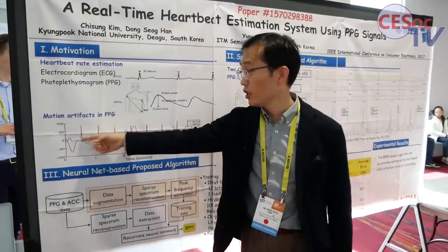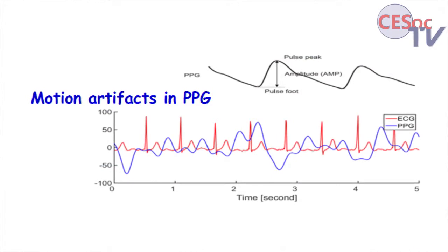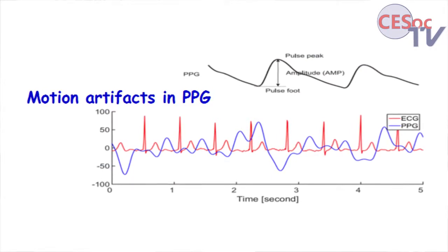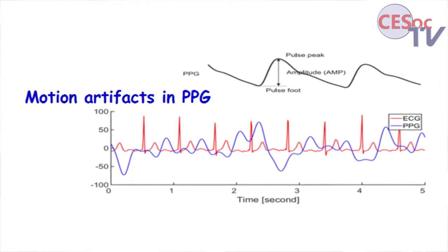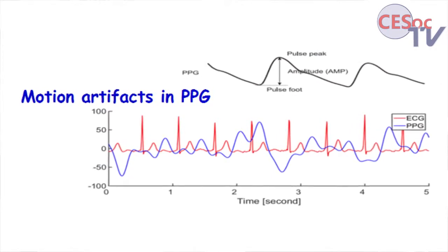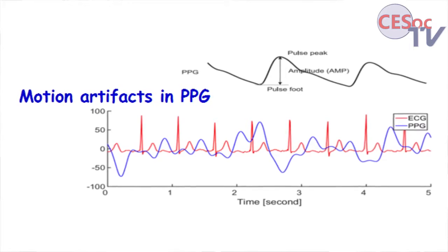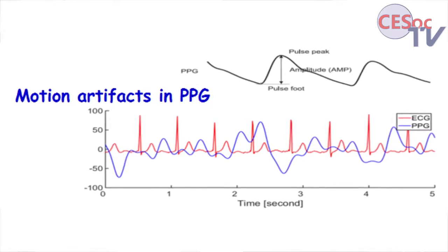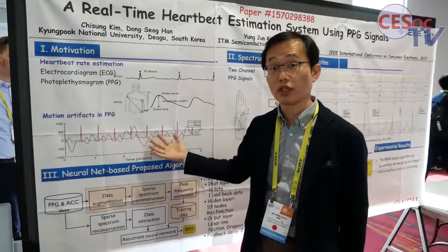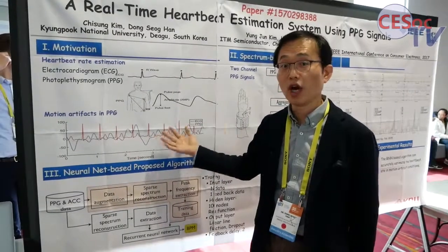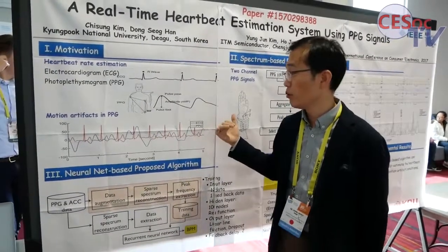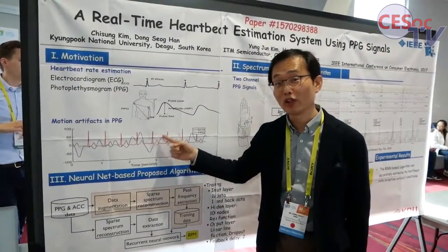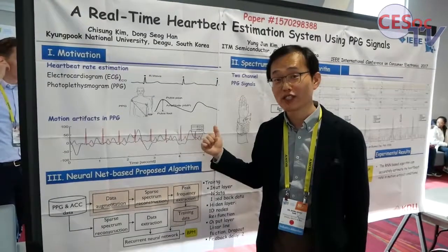This is the exact heartbeat rate pulses, but from the PPG signals from the watches, the signal is varying like this. We cannot get the regular pulse like this. Our goal is to obtain those pulses from this signal.